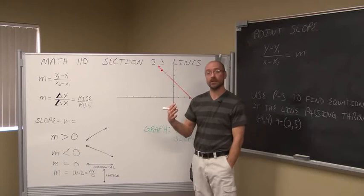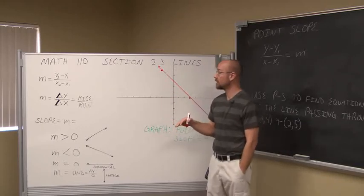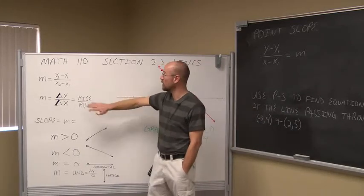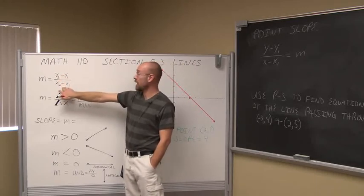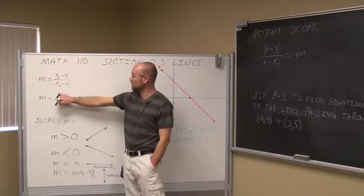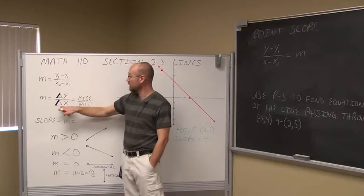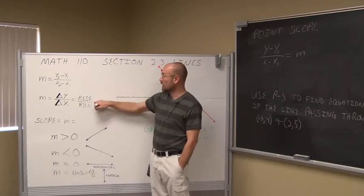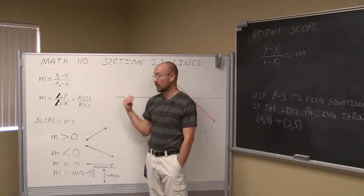Slope tells us the average rate of change between any two points. It's described by this equation: the change in y of two points divided by the change in x of two points. This notation is delta y — delta meaning change, found by finding a difference — over delta x. In some aspects it's described as rise over run, rise being our y, how high or how low, and run being how far left or right.